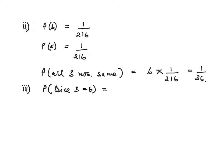The third question asks us to find the probability of only dice three giving a six. We have to think about dice one: the probability of getting a one to a five is five out of six — we're not interested in getting a six. Dice two is exactly the same; the probability of getting one, two, three, four, or five is five out of six. The third dice has only one six, so the probability is one out of six. We multiply along the branches: five times five is 25, giving us 25 over 216. And that is how we do probability tree diagrams.